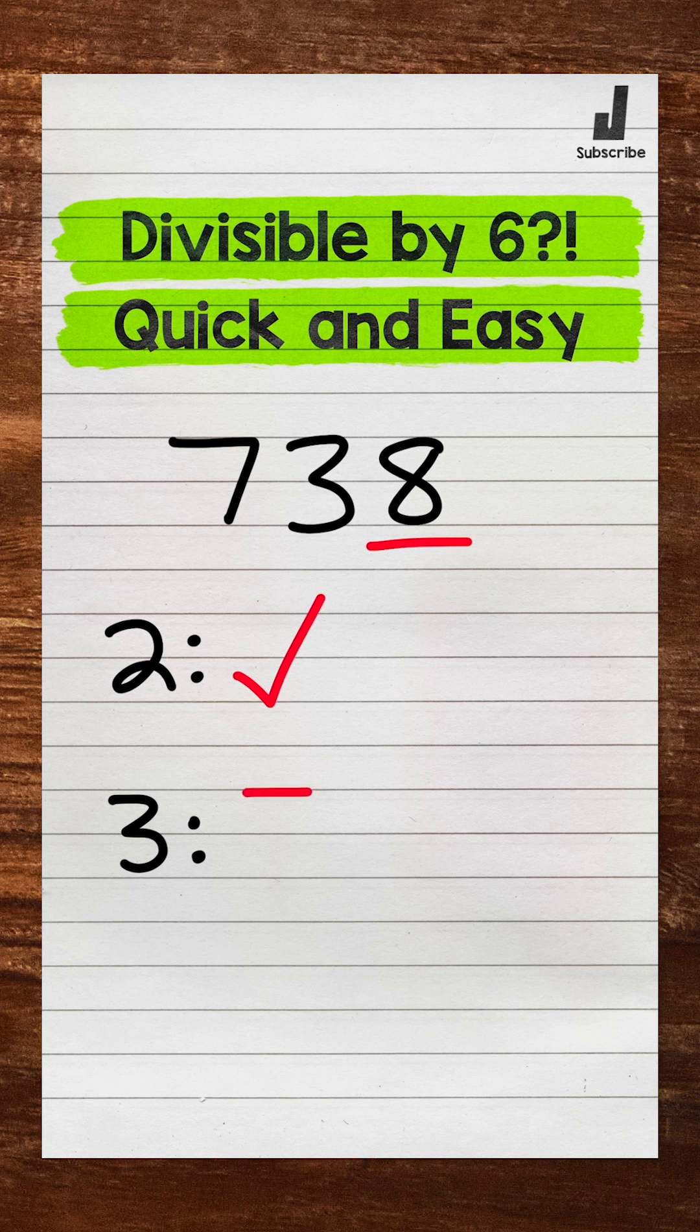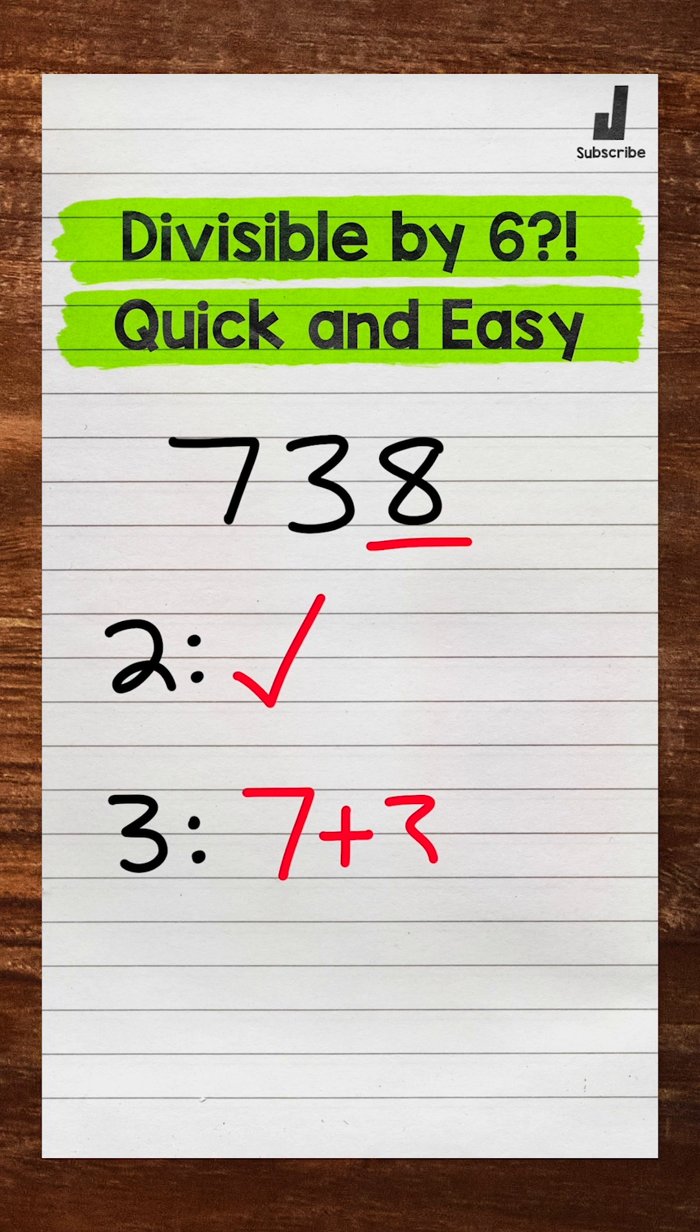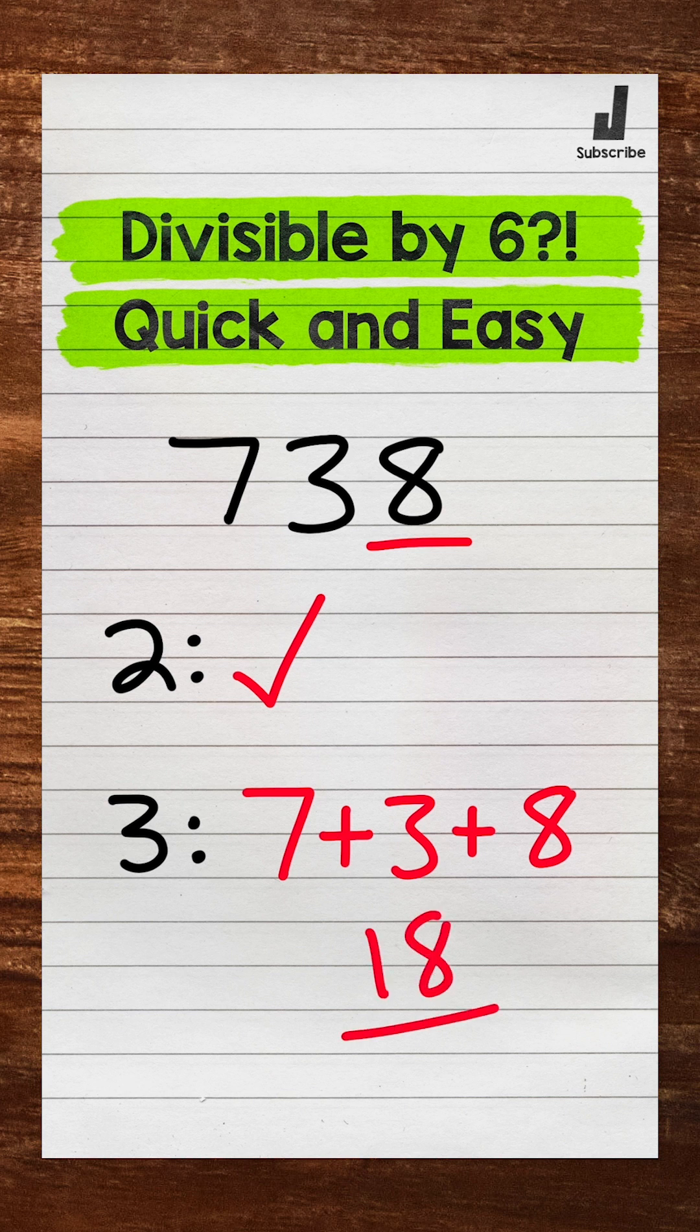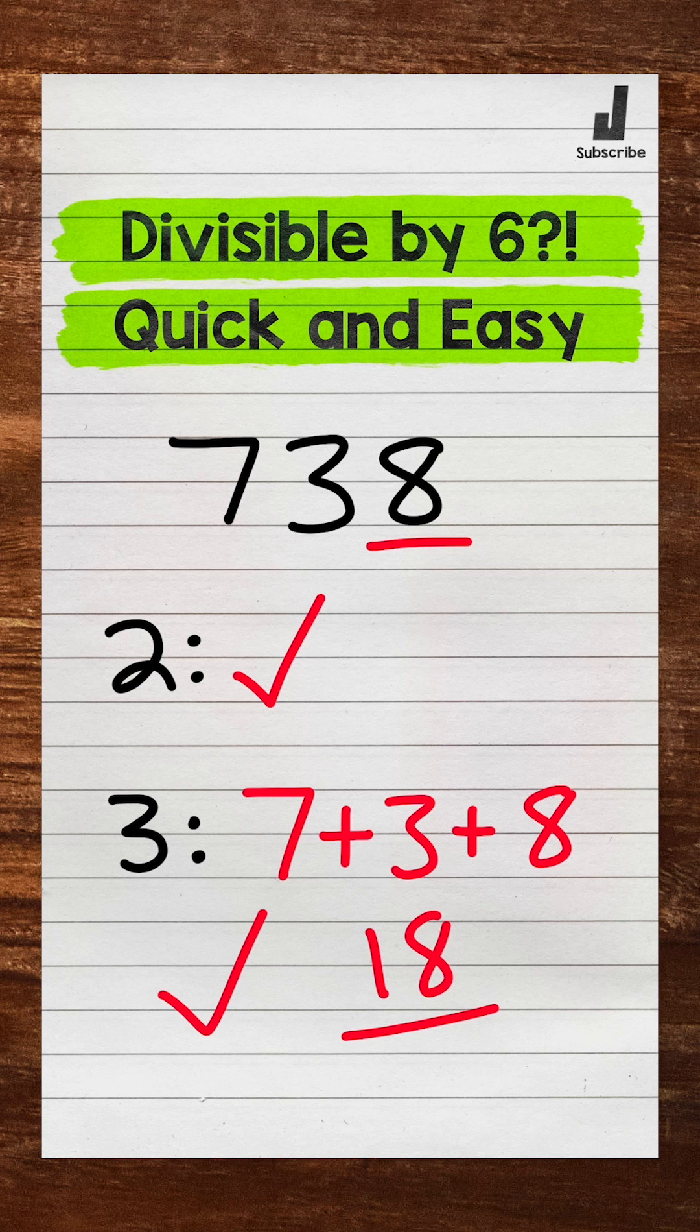Now as far as checking if it's divisible by 3, we need to add the digits and see if that sum is divisible by 3. So we have 7 plus 3 plus 8. 7 plus 3 is 10, plus 8 is 18. 18 is divisible by 3, so 738 is divisible by 3.